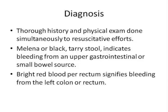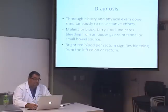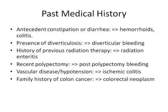You need to obtain a thorough history and physical exam simultaneously with your resuscitative efforts. Melena or black stools indicate bleeding from an upper GI source, and bright red blood per rectum indicates bleeding from the left colon or rectum. Past medical history can help: constipation or diarrhea points to hemorrhoids or colitis; history of diverticulosis to diverticular bleeding; prior radiation therapy to radiation enteritis; recent polypectomy to post-procedure bleeding; vascular disease with hypotension to ischemic colitis; family history of colon cancer to colorectal neoplasm.